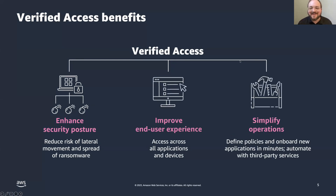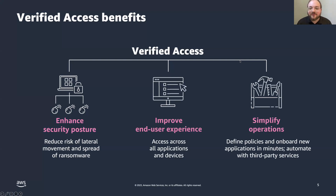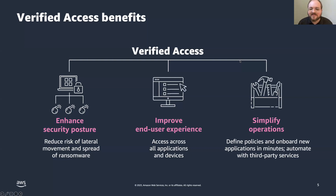What benefits do organizations get from AWS Verified Access? The first is an improved security posture. A traditional security model evaluates access once and then grants network access to all users. This can add risk as bad actors who gain access to a customer's server can move across the network to applications that might contain sensitive data. AWS Verified Access evaluates each request in real time, making it harder for bad actors to move from one application to another. You also have centralized visibility through logs, contributing to an improved security posture.